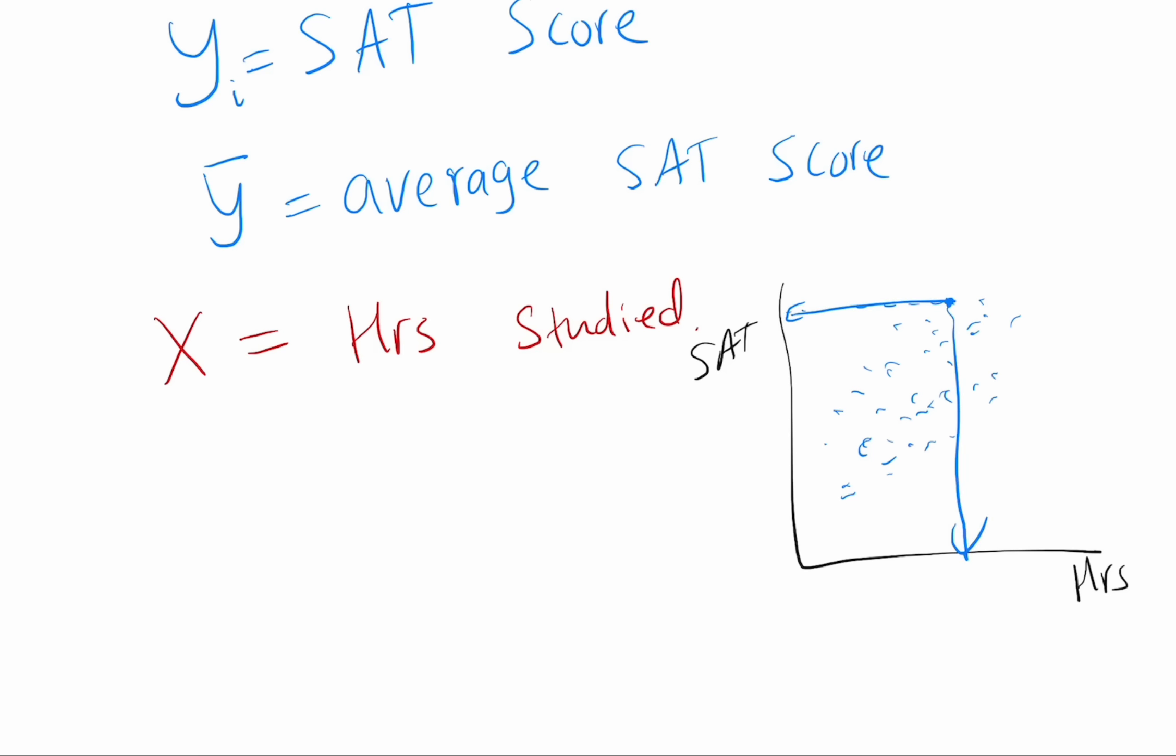So that's just that specific person's values. That's like yi is each data point. It's like y1, y2, y3, depending on the person.